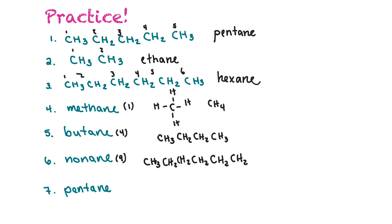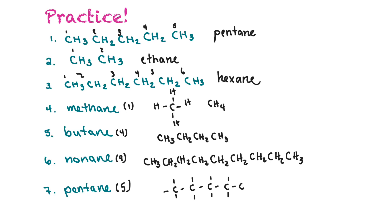Continuing nonane: CH2, CH2 — counting through all nine carbons — and that's nonane. Then for pentane drawn in branched-out format: pentane is five carbons, so we draw five carbons, fill in the empty bonding spaces, and put hydrogens in. And that's pentane.